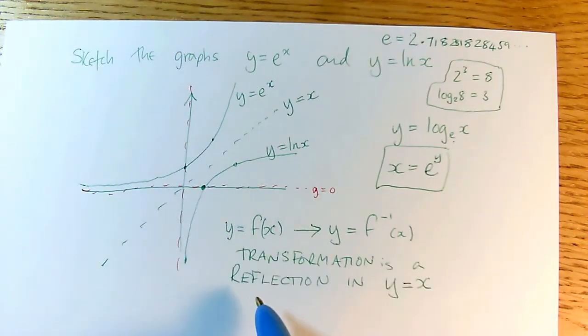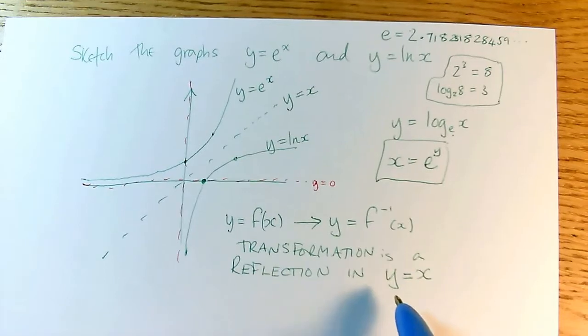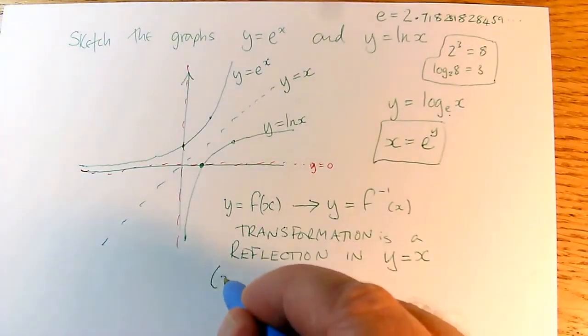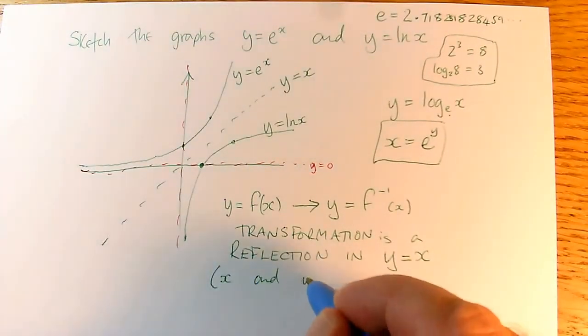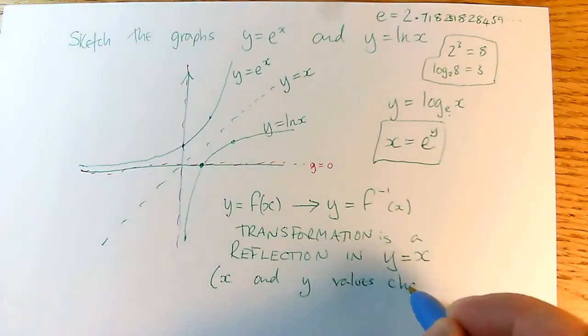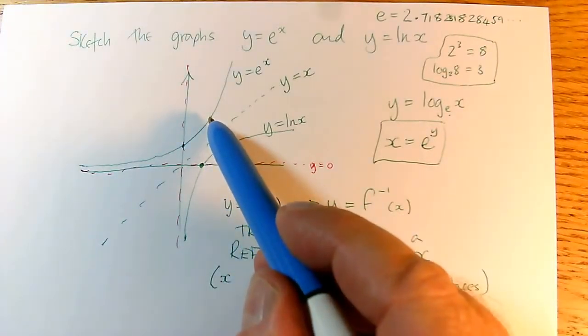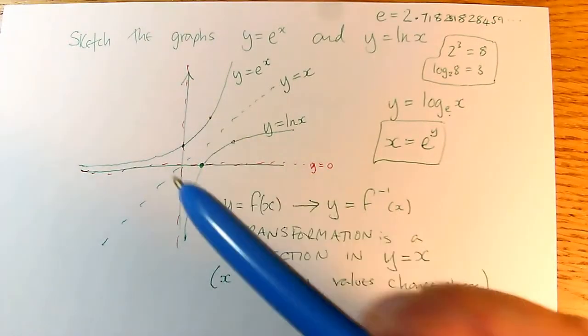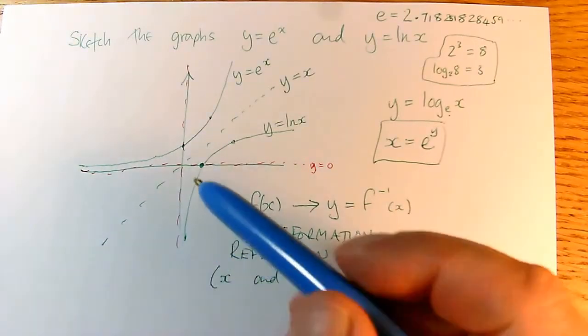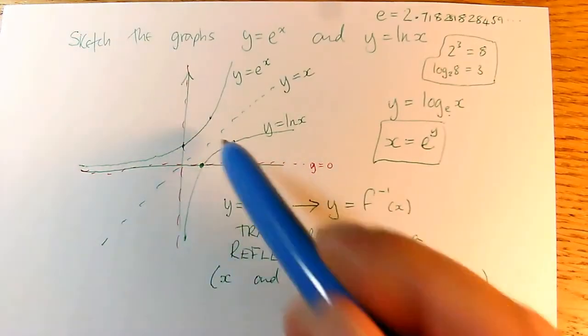So you need to learn this transformation, reflection in the line y equals x. And the reason why that happens is that x and y values change places. So that means that for an individual point, its coordinates, instead of being an x and a y, those same two numbers are used as a y and an x, which is why we get a corresponding point down here.